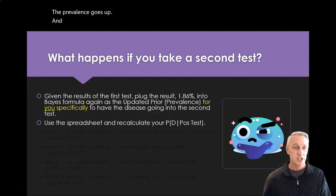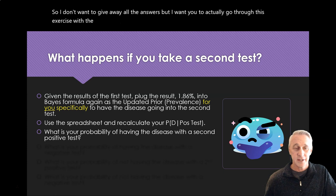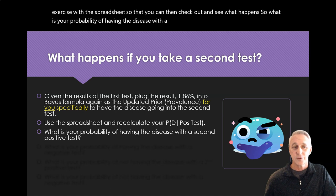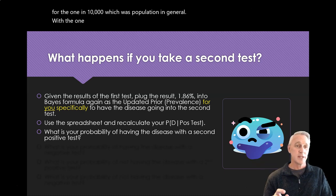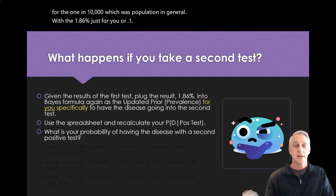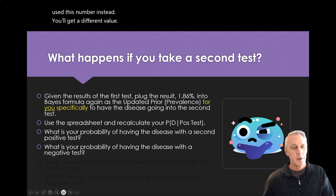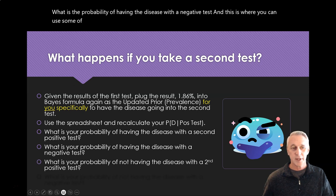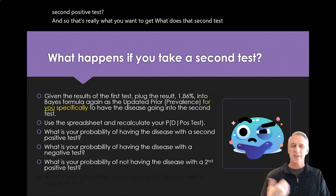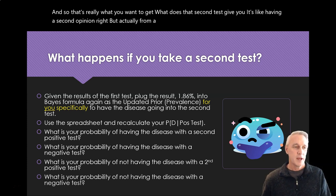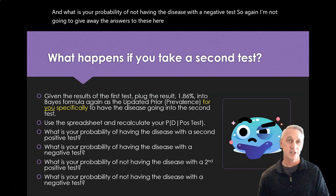I don't want to give away all the answers, but I want you to go through this exercise with the spreadsheet. What is your probability of having the disease with the second positive test — plugging in 0.0186 instead of 1/10,000? What is the probability of having the disease with a negative test? What is the probability of not having the disease with a second positive test? And what is the probability of not having the disease with a negative test? It's like having a second opinion, but from a test standpoint.